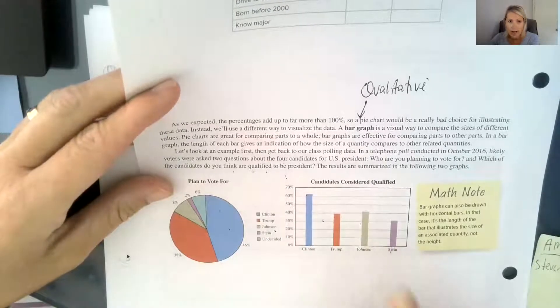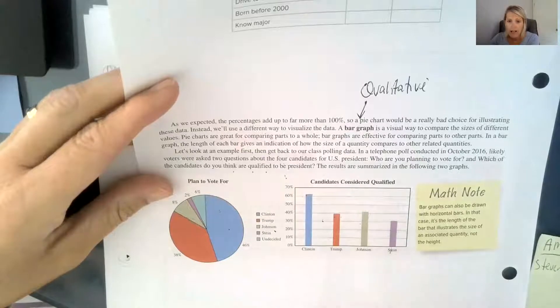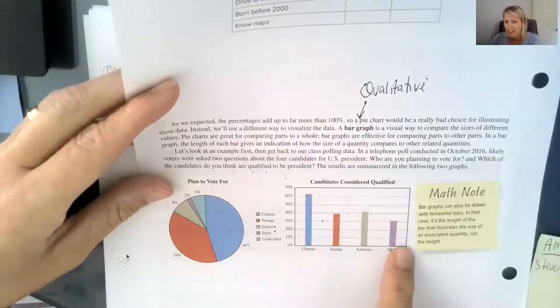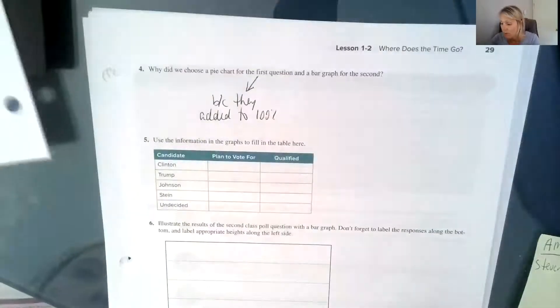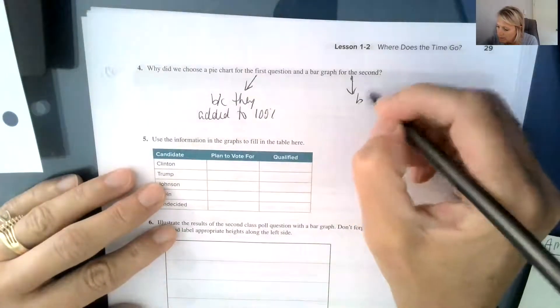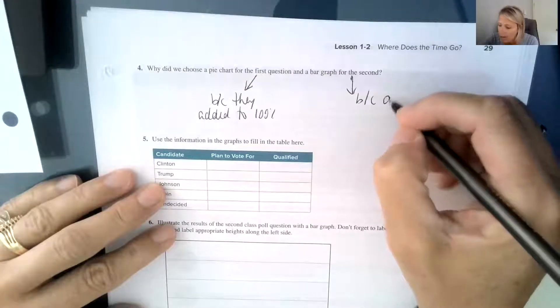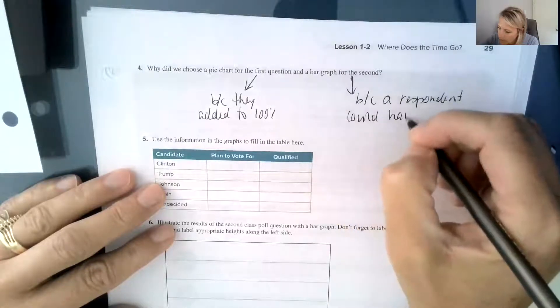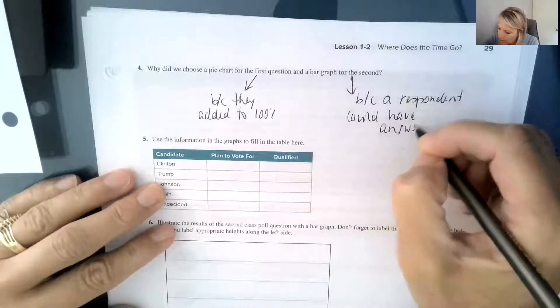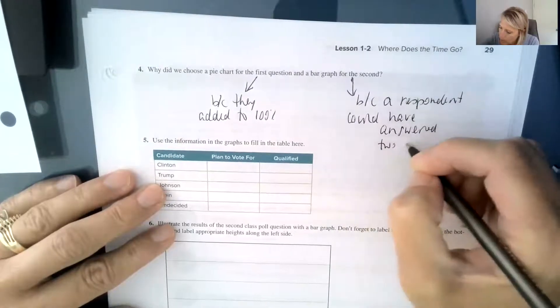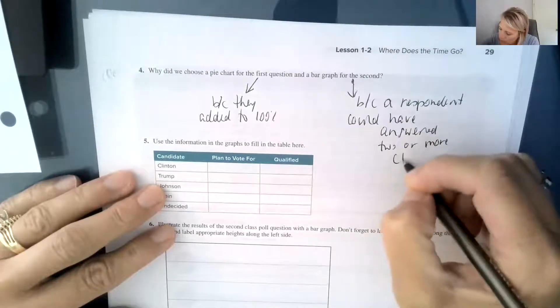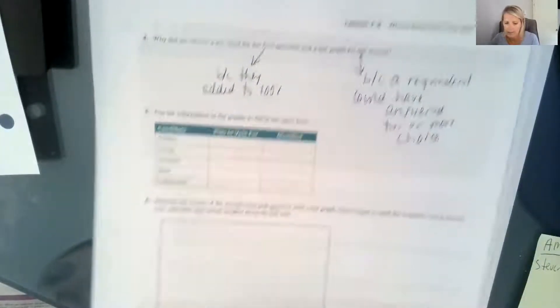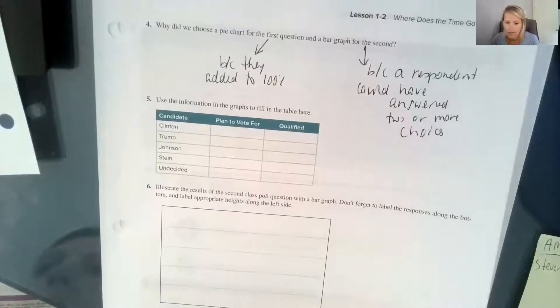Here, they're asking the question, which of the candidates do you think are qualified to be president? And so somebody might have said, I think Clinton's qualified and I think Stein is qualified. So they could have answered two different answers because a respondent could have answered two or more choices. So that's important. So those are the big things between the pie graph and the bar graph.